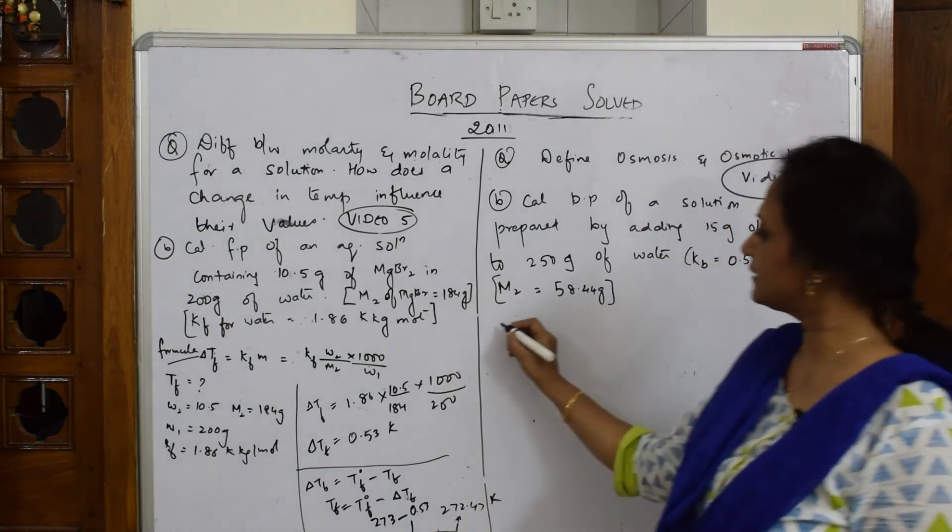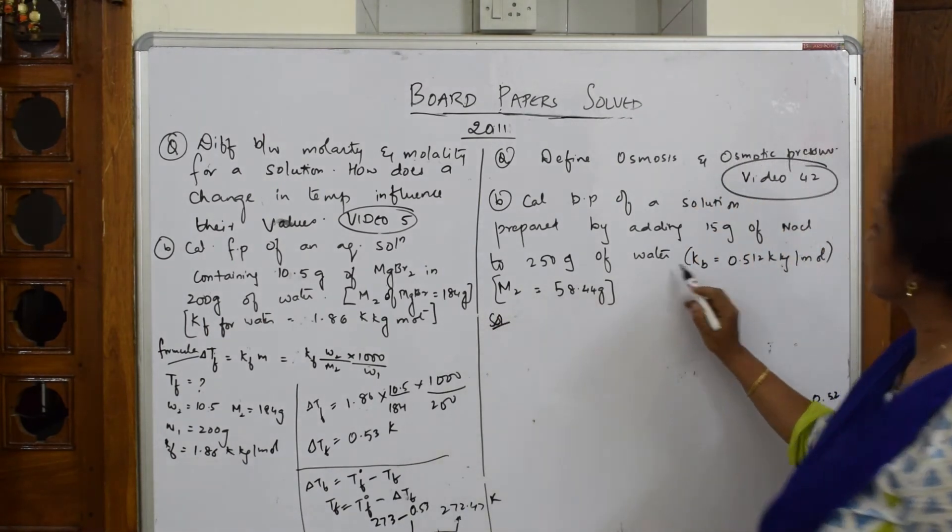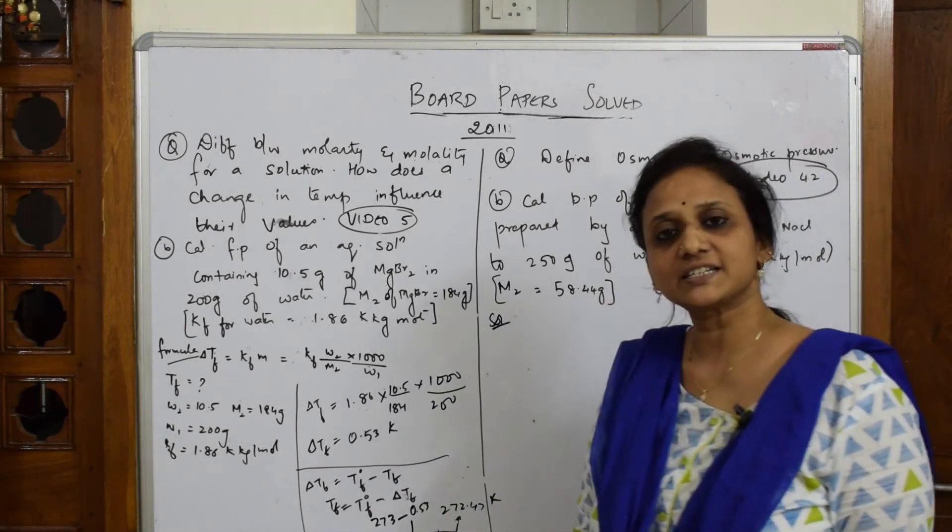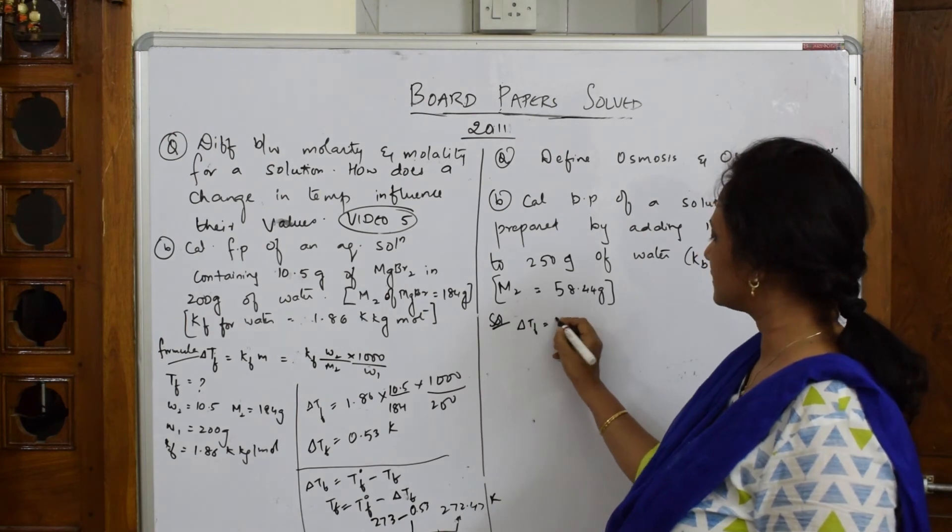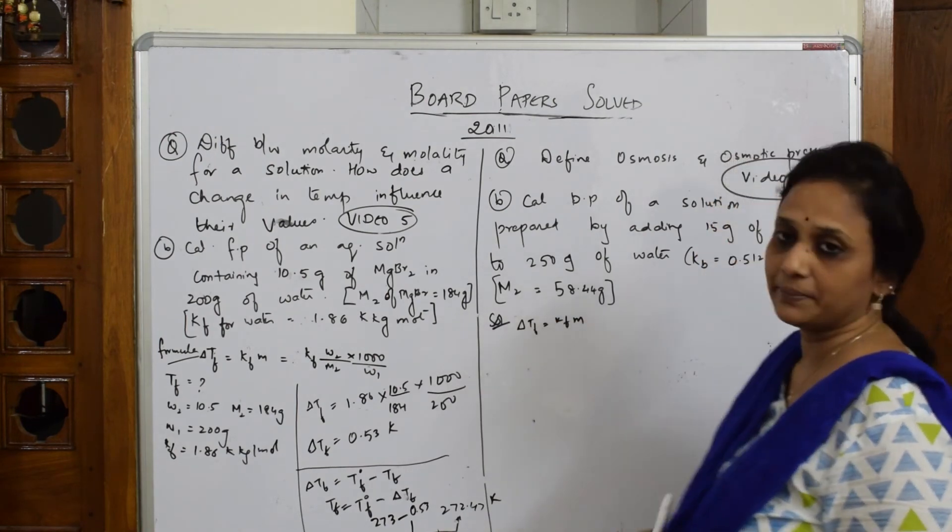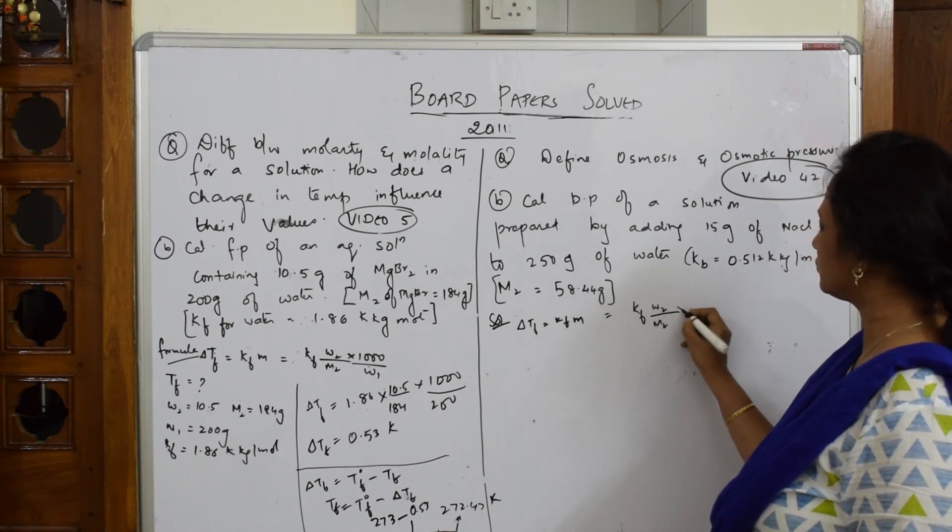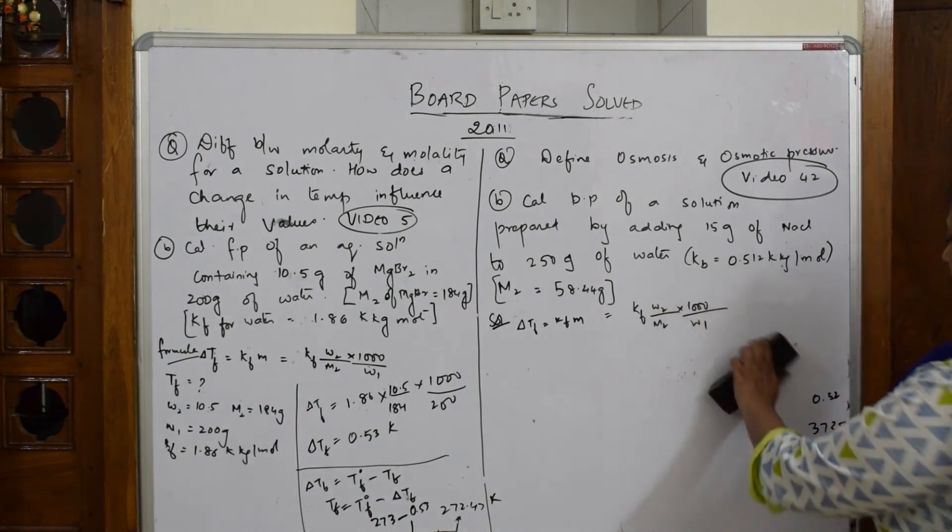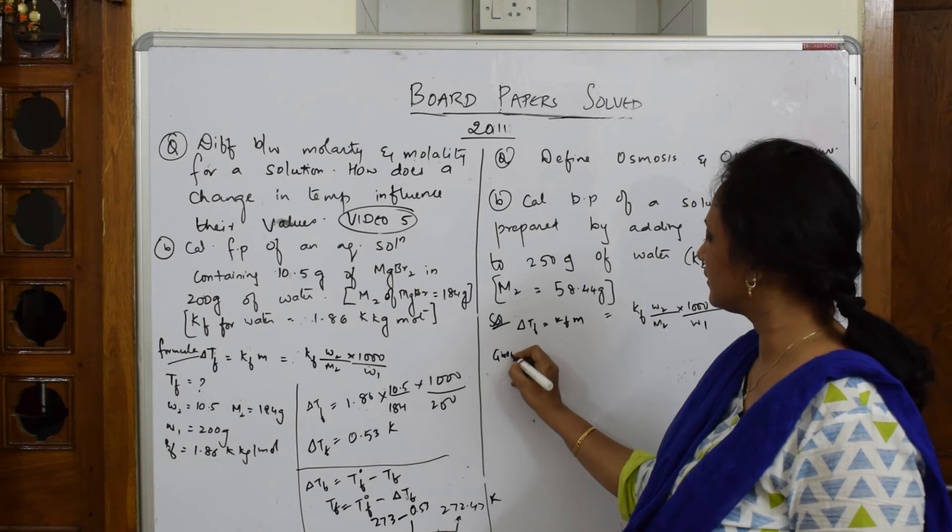Now let's see elevation. Let me write the formula. KB is given, molar mass is given, weight is given. Same formula: delta TB equals KB into m, which is KB into w2 by m2 into 1000 by w1.